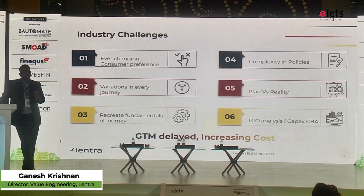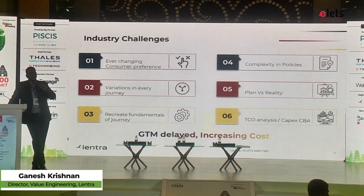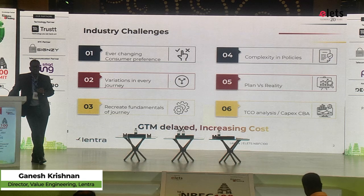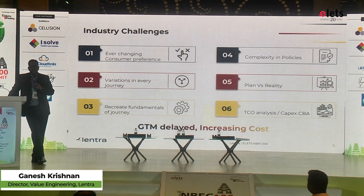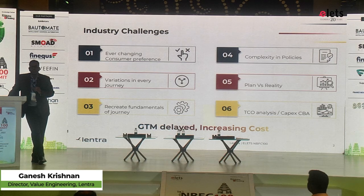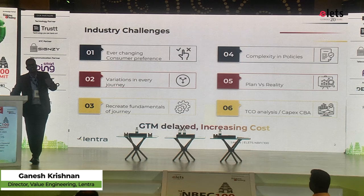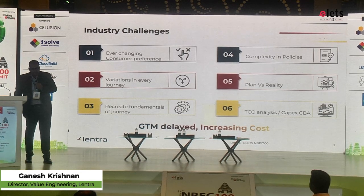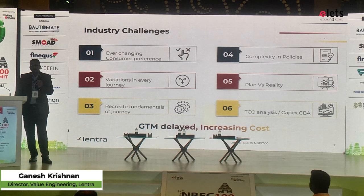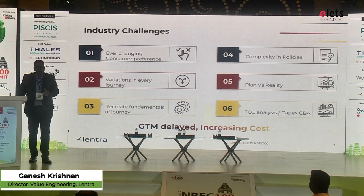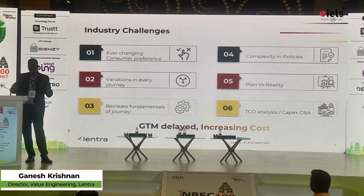Recreating the fundamentals of the journey — which KYC is to be triggered for a particular product or journey, or what data points need to be captured for a specific verification — these are very specific ones. But can we have a templatized version for these things? Why do we need to spend more time discussing the same things? Complexity in policies: can I have a triangulation of data coming from my bureau, from my third-party API source, or the data captured from my OCR? Can I do a triangulation of this data and derive some kind of meaning or scoring out of it, or write a complex rule combining AND and OR logic from multiple sources?